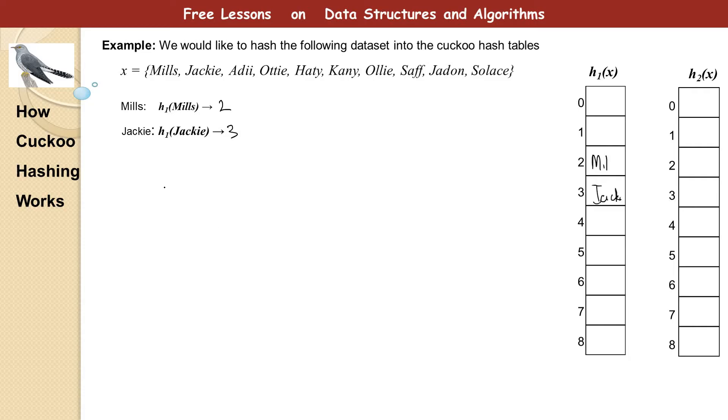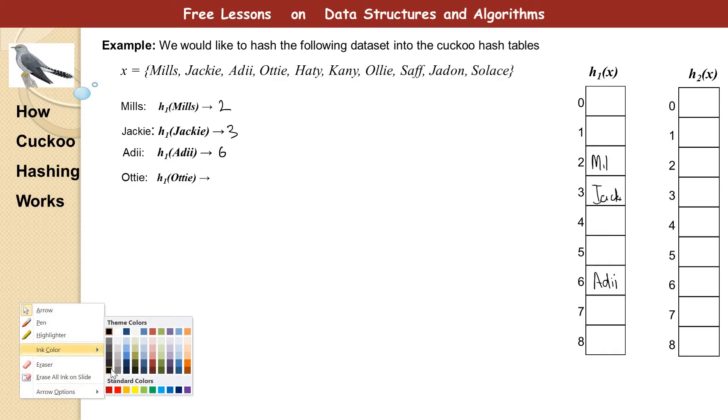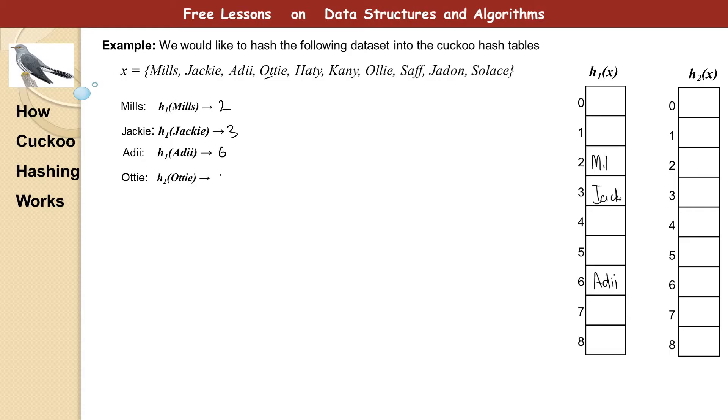So let's go to the next one. h1 of Addy. Let's see what it gives us. So it gives us six. So we put it in six. So no problem for now. But I tell you problem is going to arise any moment from now. Because if you try to hash and there is something in there, that's when the problem comes. h1 of Addy, that is this item here, it gives us eight. No problem at all. So we place Addy here.